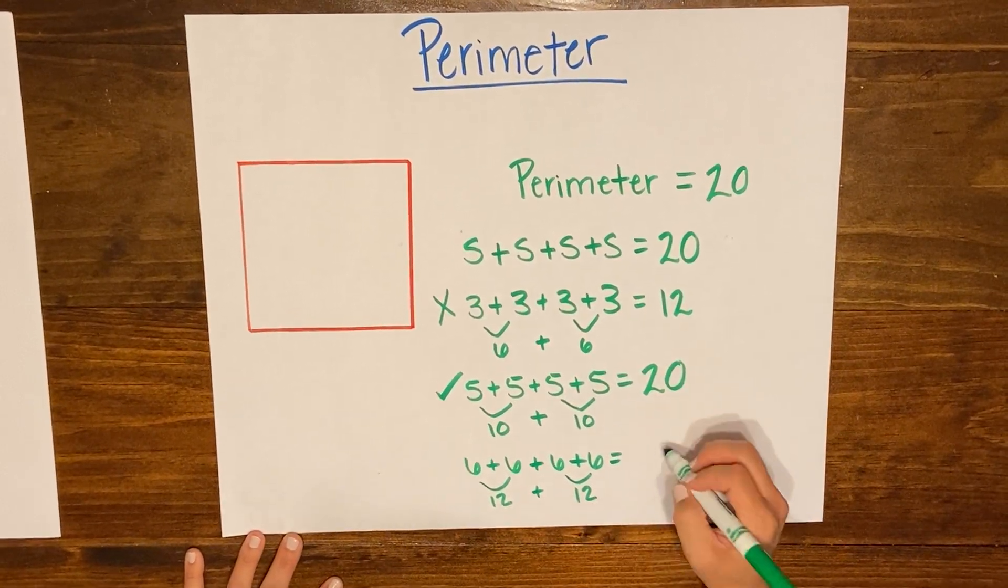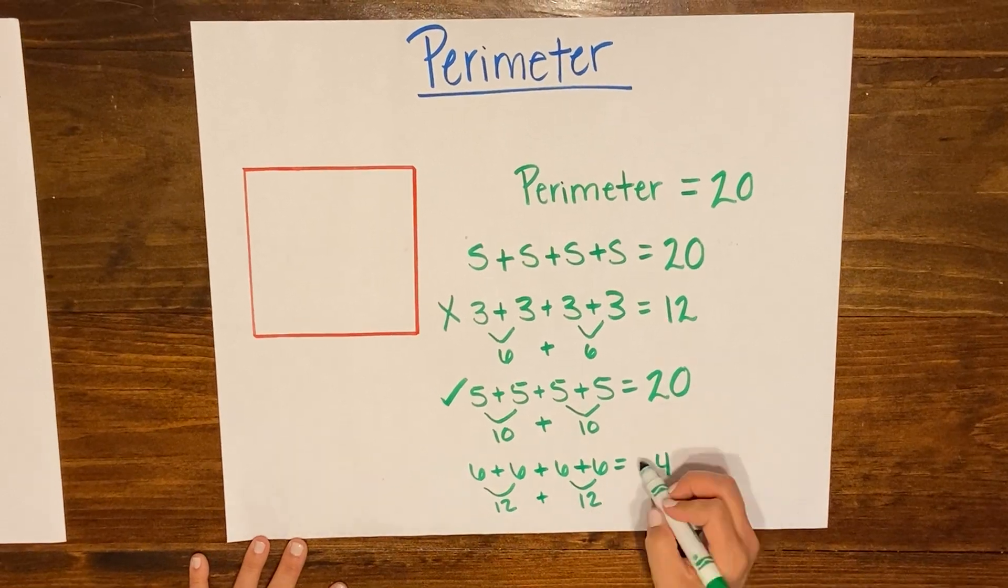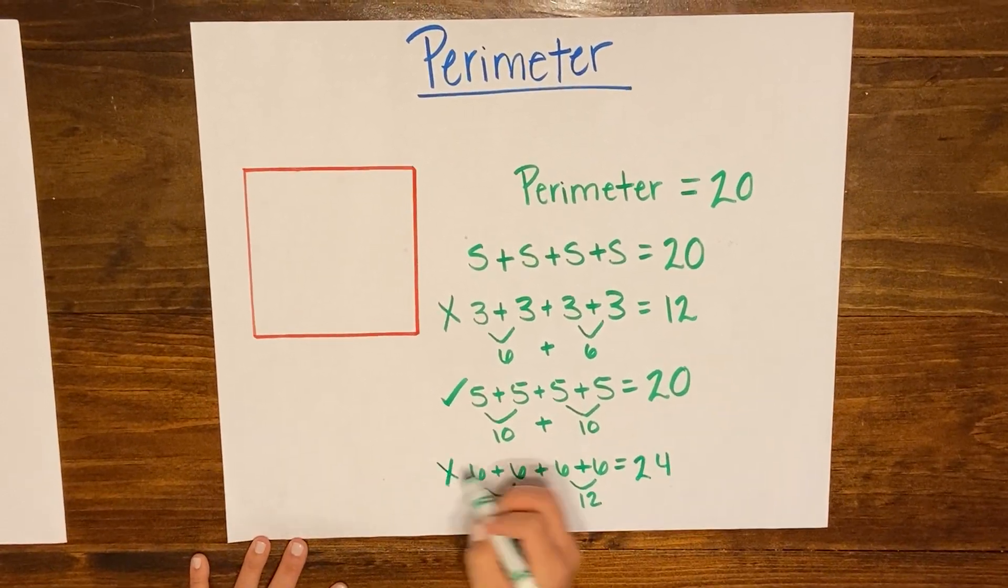2 ones plus 2 ones is 4 ones, 1 ten plus another ten is 2 tens. This one is too big so it does not work.